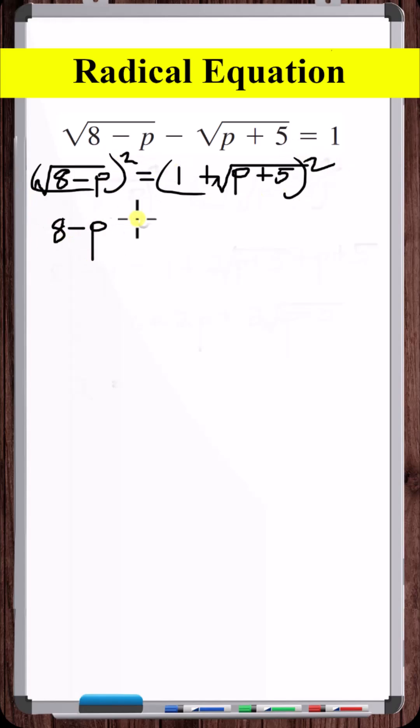Now, let's square both sides. So, this simplifies to 1 plus 2 square root of p plus 5 plus p plus 5.